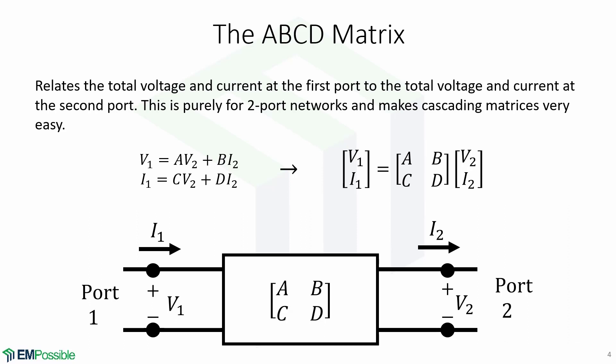In previous lectures we have used the Z, Y, and S parameters to characterize microwave circuits. However, in practice many microwave networks consist of a cascade connection of many two-port networks. This is where the ABCD matrix is more convenient.